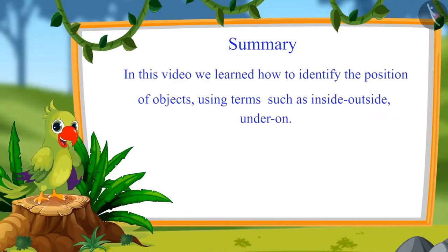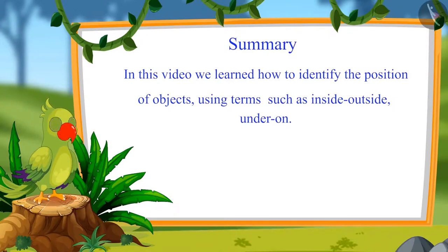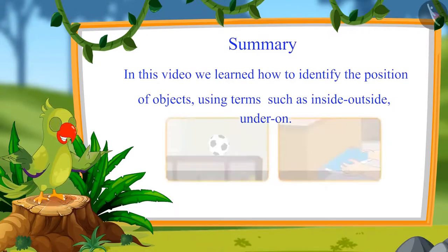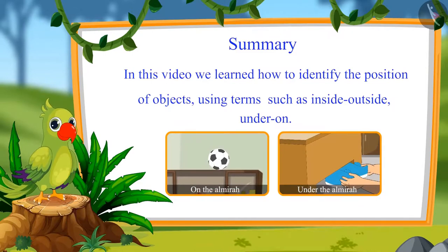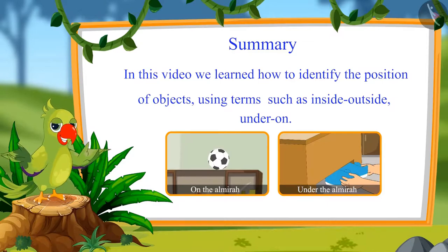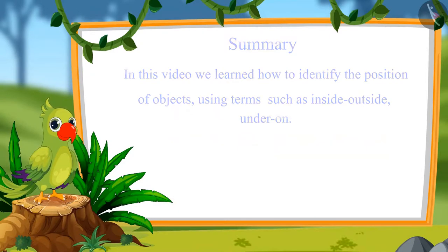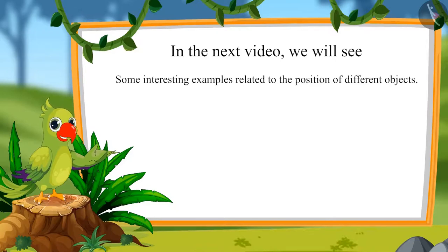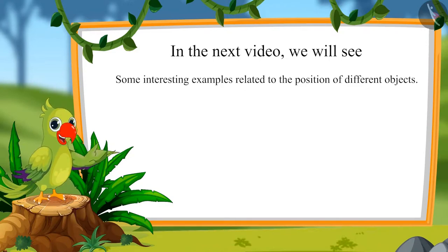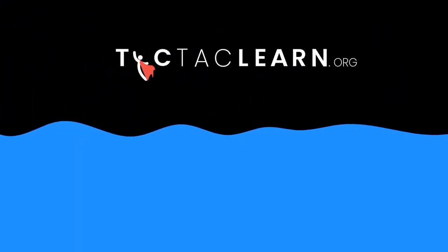That's all for today, children. In this video, we learned how to identify the position of different objects and know the position of objects using terms such as inside, outside, under, and on. In the next video, we will see some interesting examples related to the position of different objects. Till then, bye children — we'll see you next time. Bye!